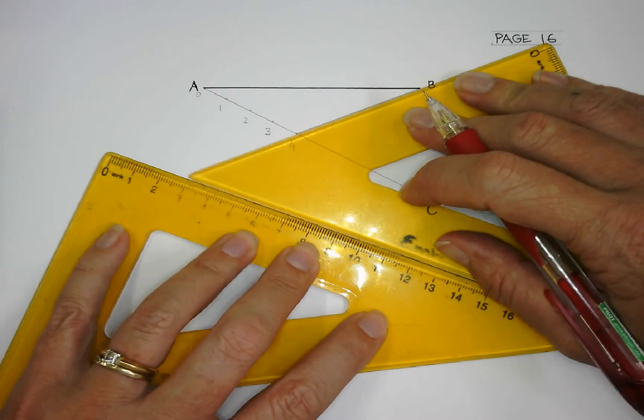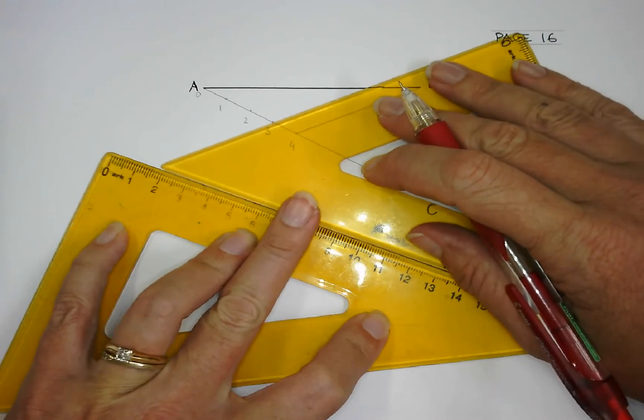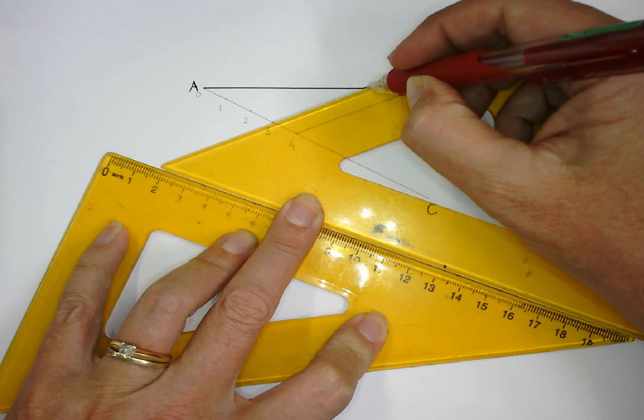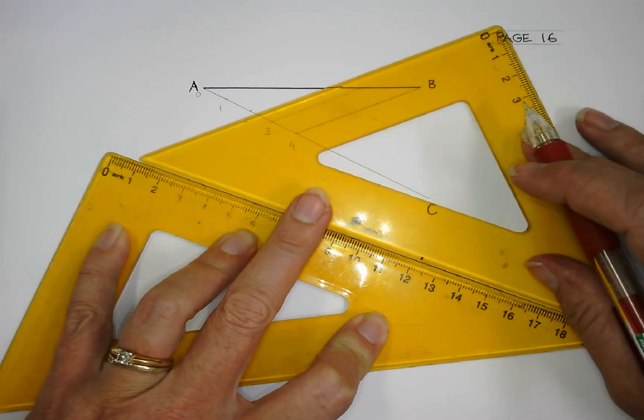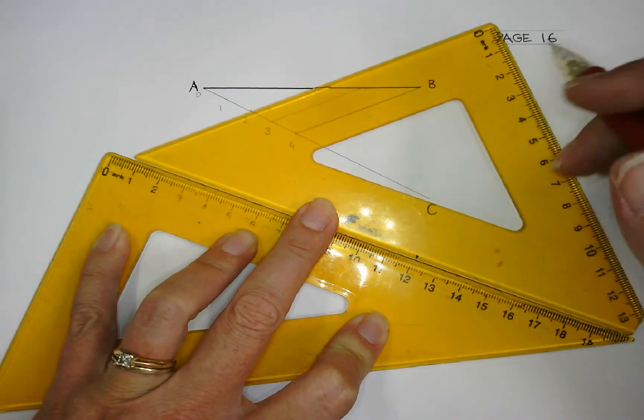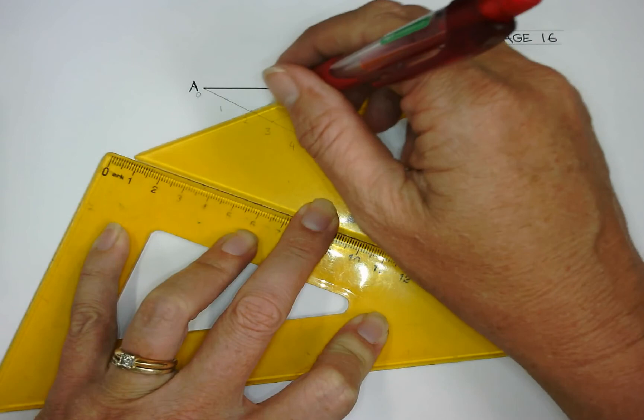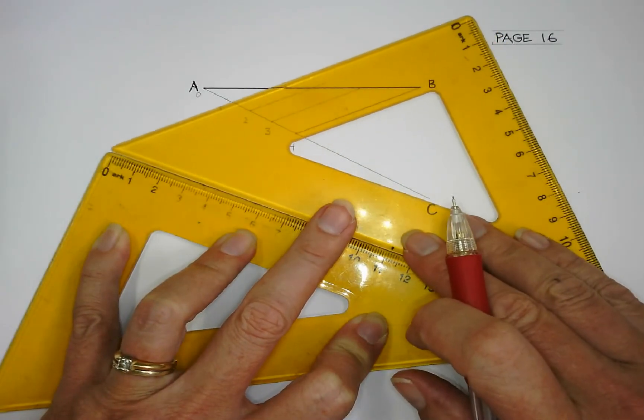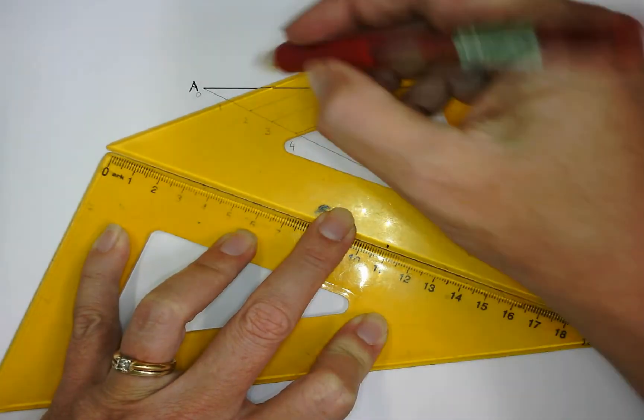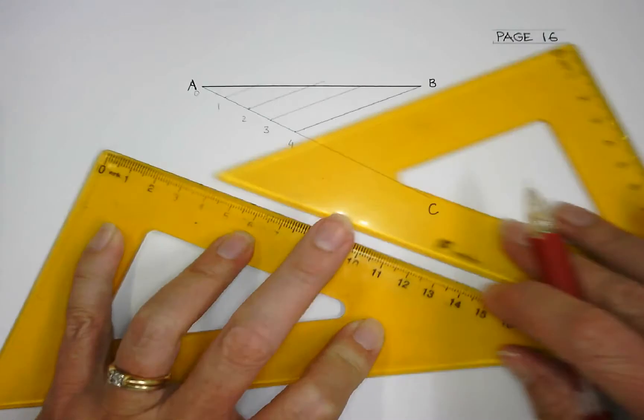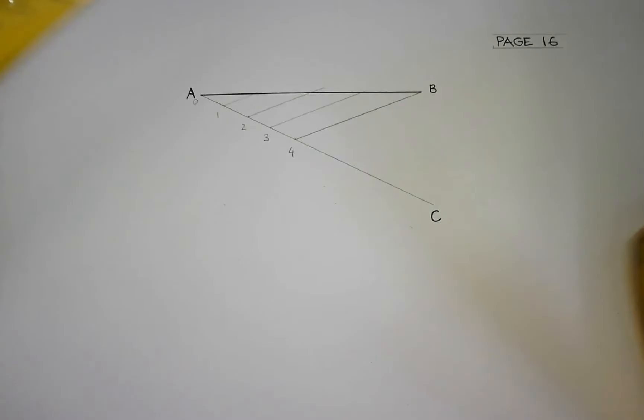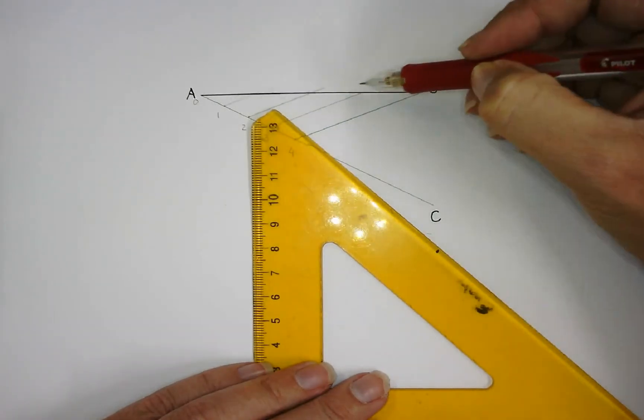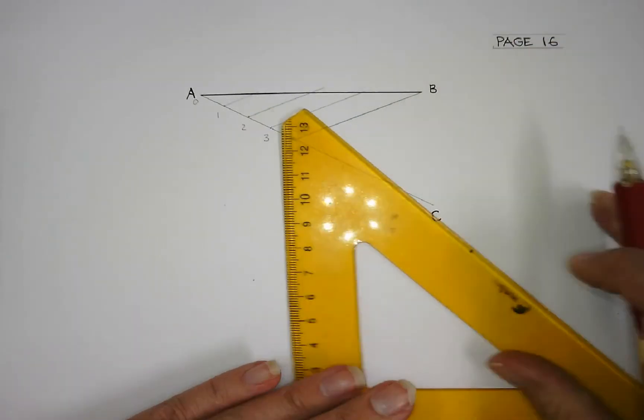Take your set square and slide underneath. Let go of this one, holding down the bottom one, and I'm drawing a parallel line to this line. That is giving me my four equal divisions.